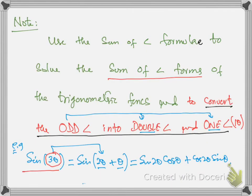Note: use the sum of angle formula to solve sum of angle forms. Of course we use these formulas to solve the sum of angle form, but these formulas are also important to convert an odd angle into a double angle and one single angle — for example, converting 3θ into 2θ and 1θ.